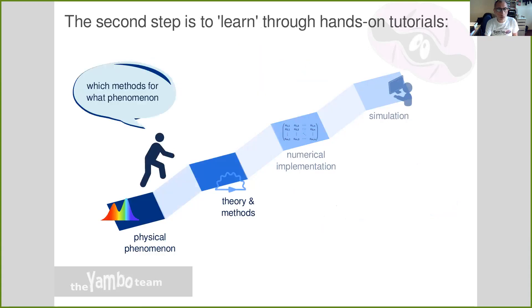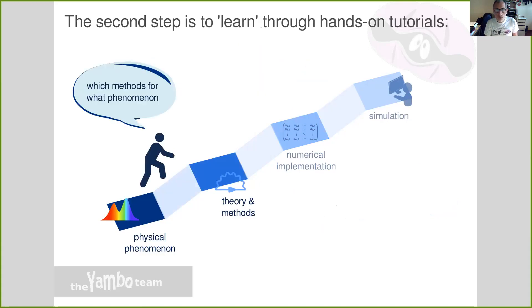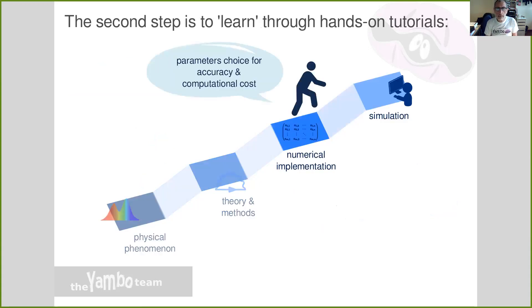So you need to answer several questions. Which method is good for my phenomenon? And then which theories and which parameters I have to choose to get a certain accuracy at a reasonable computational cost?